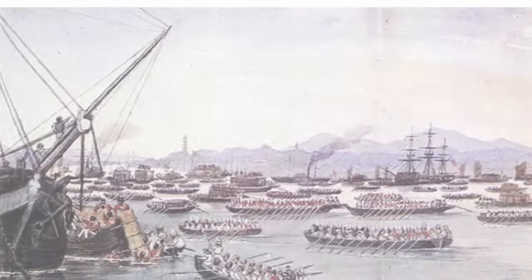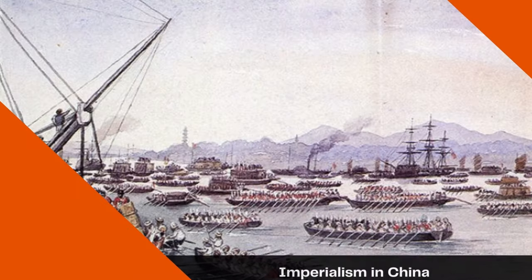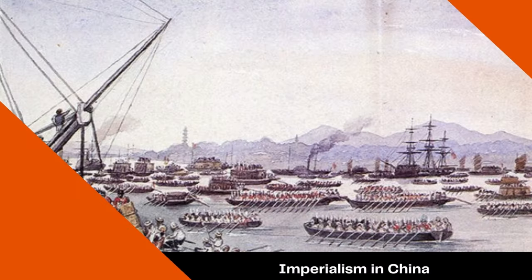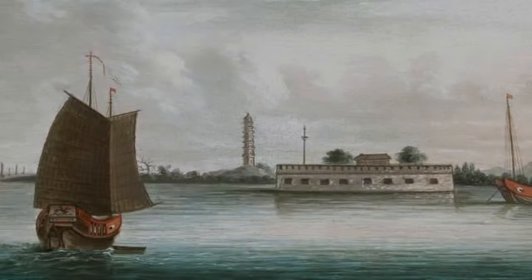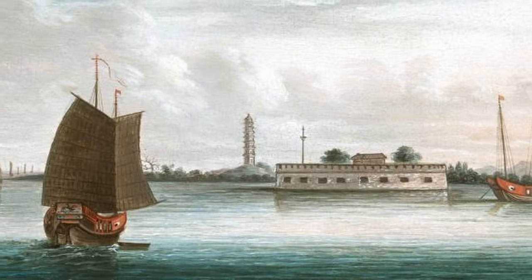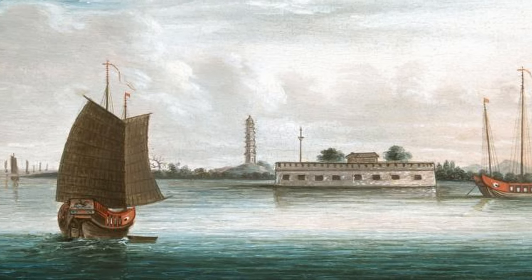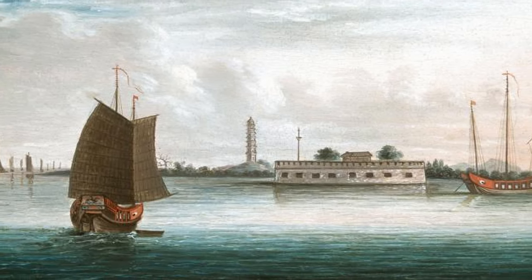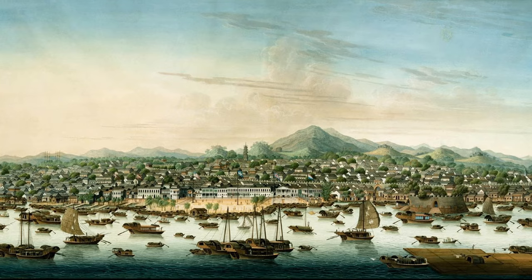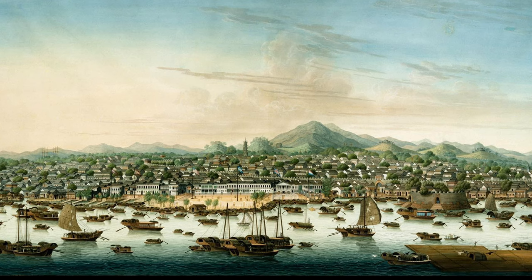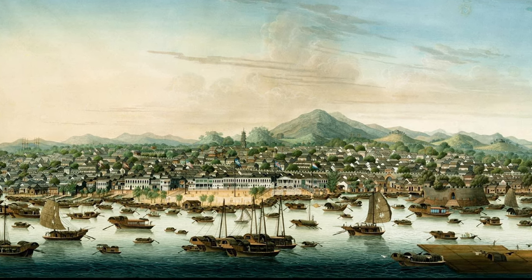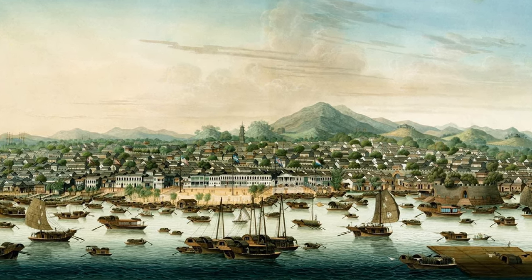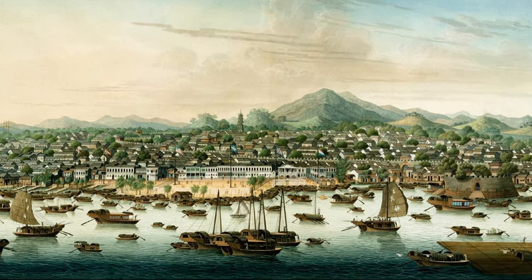Today on The Daily Dose, the age of imperialism in China. After Qing Dynasty leaders attempted to limit Western influence by establishing the Canton system, which forced all foreign merchants to trade only in the port of Canton, now known as Guangzhou.